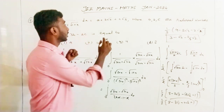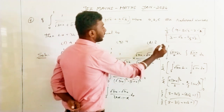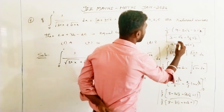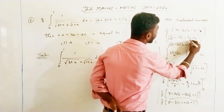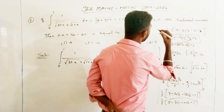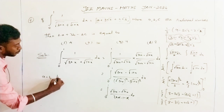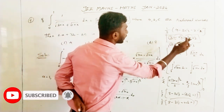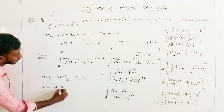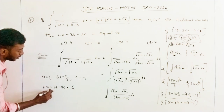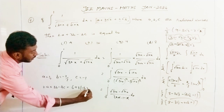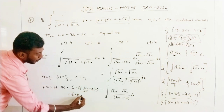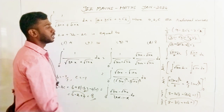Now we find 2a + 3b - 4c. Comparing 3 minus root 3 minus (2/3) root 2 with a plus b root 2 plus c root 3, we identify: a equals 3, b equals minus 2/3, and c equals minus 1. Therefore 2a plus 3b minus 4c equals 2 times 3 plus 3 times (minus 2/3) minus 4 times (minus 1), which gives 6 minus 2 plus 4 equals 8. Option D is the correct answer. Thank you.